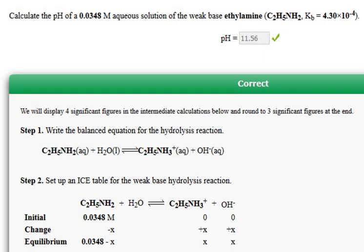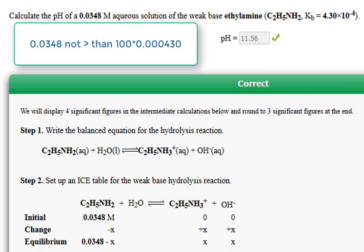Now we're asked to calculate the pH of a weak base solution. The approximation cannot be made. In other words, we cannot ignore the x in the denominator because the initial concentration, 0.0348, is not greater than 100 times the Kb.